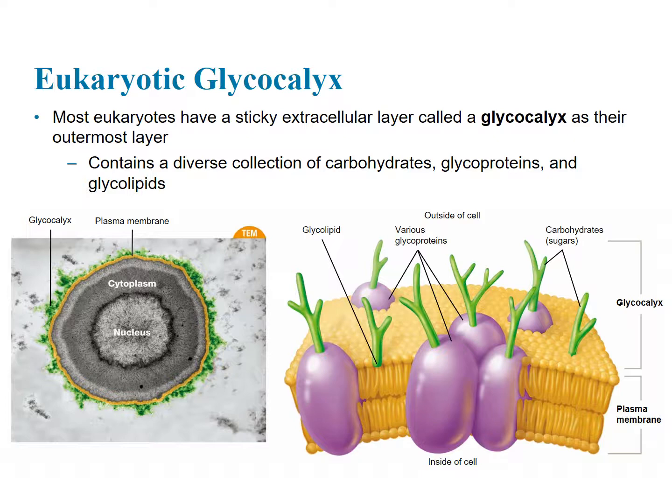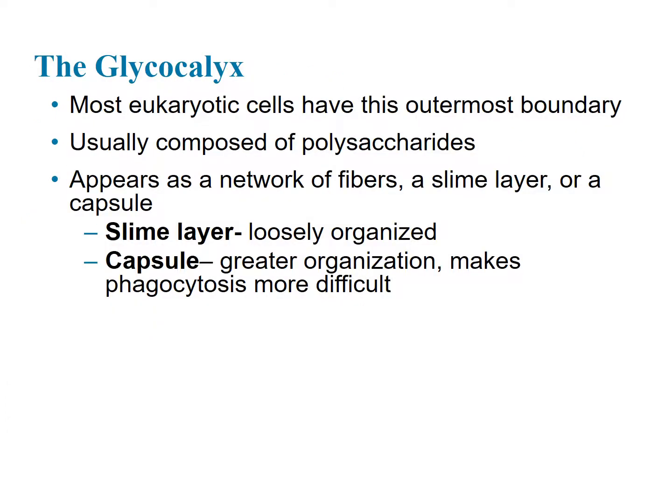Not all eukaryotic cells are going to have a glycocalyx, just like not all bacteria did. Those that do will have a different set of proteins and sugars than we saw with bacteria. Its purpose again is protection — protection of the underlying cell and the plasma membrane. These are bigger cells that can themselves be prey to larger cells or multicellular organisms, so the glycocalyx serves as a protective layer against that.